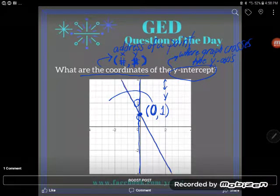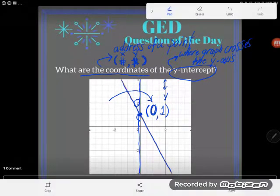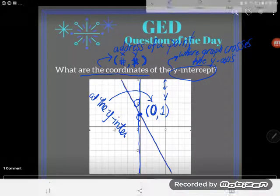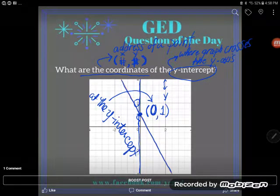You don't have to have this memorized, but I gotta tell you, a lot of math students do have it memorized. They know that at the y-intercept, the x-coordinate is always zero. And if you have that memorized, it makes your life a little easier, especially later in math. But even if you don't, you ought to be able to see that from my graph.